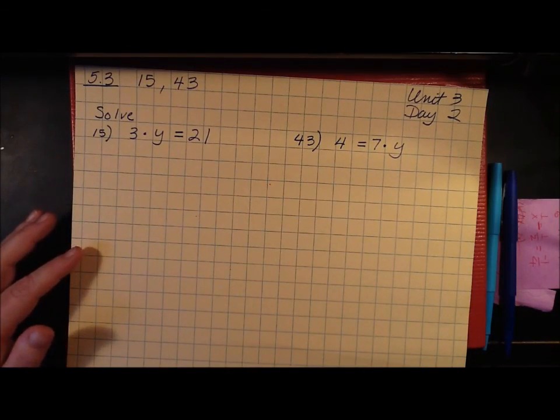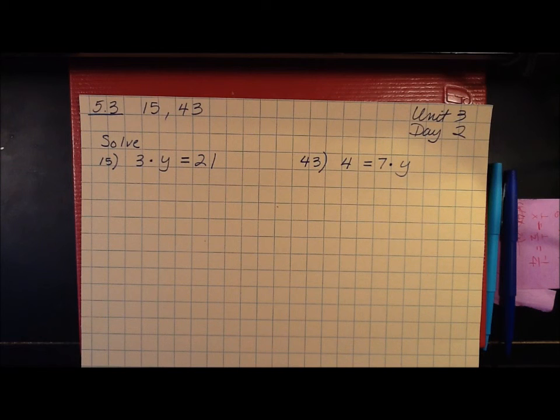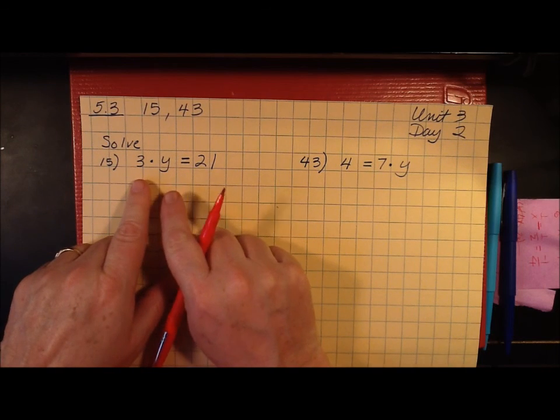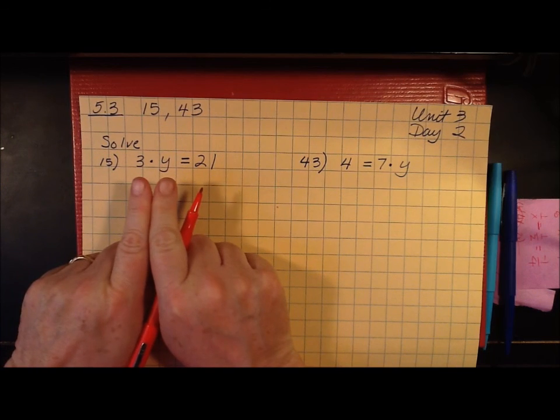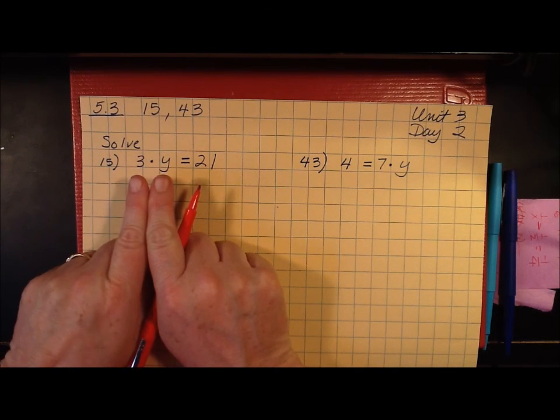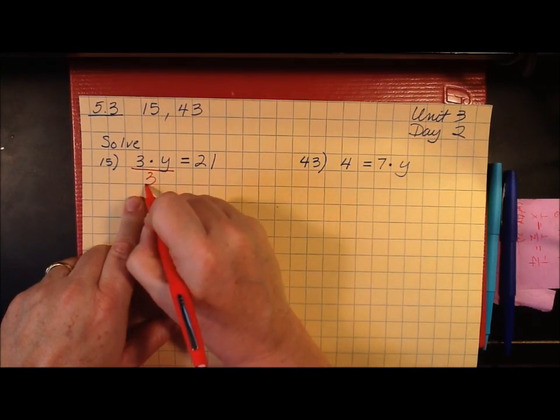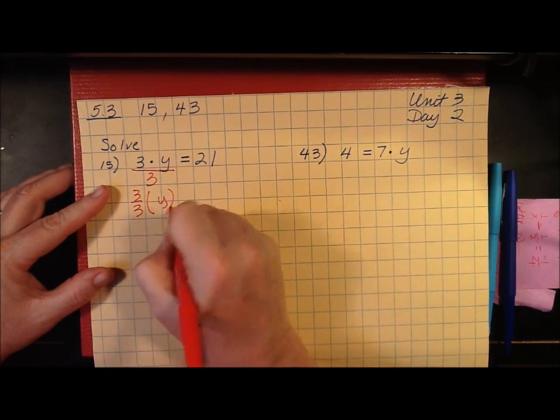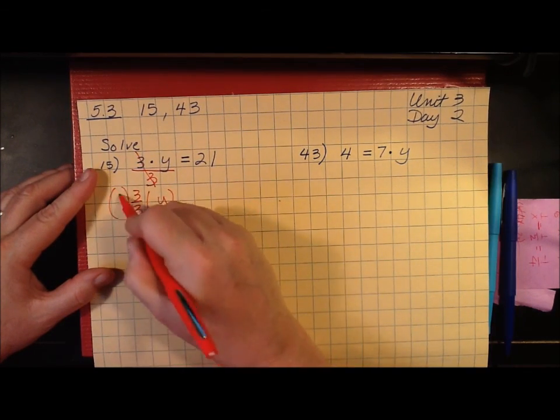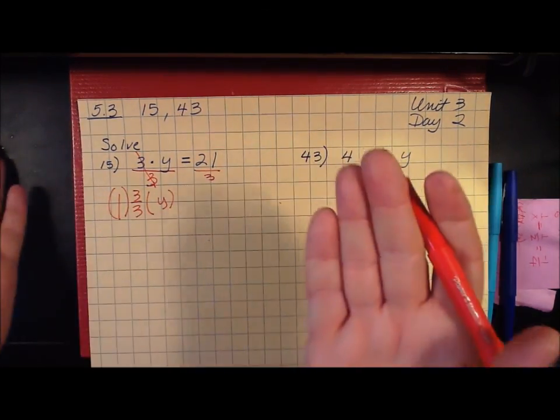Let's look at 5.3 problem 15. And they're asking you to solve using division. And the reason we use division is because the 3 and the y, the job they're doing together is multiplying. The inverse of multiplication is division. So I divided this side by 3. This would be the same as saying 3 over 3 times y because they cancel. And that's a 1, right?